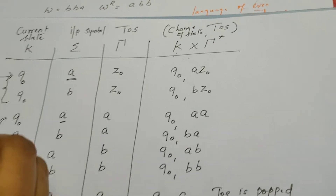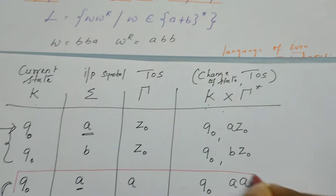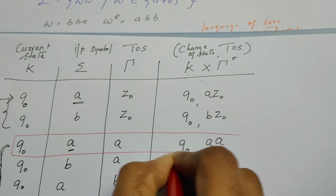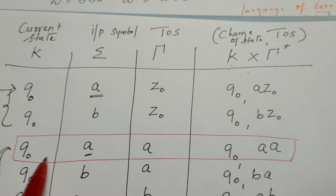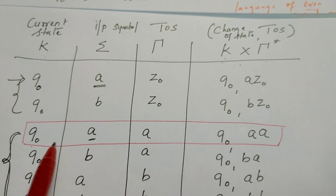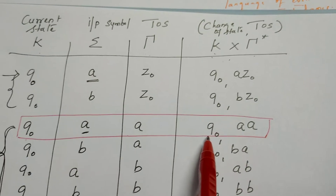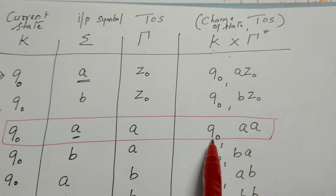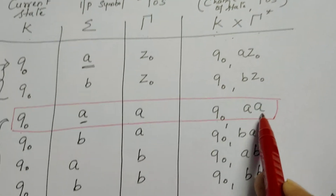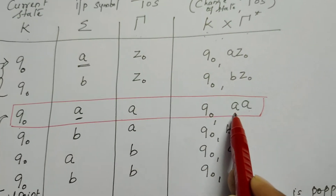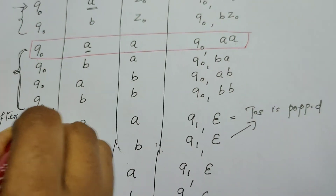Now let us look into a few rules. Look into this rule: Q0, a, a. In this situation the PDA reacts like this — it continues to stay in Q0, and since the top of the stack already contains 'a', another 'a' is also pushed. Now let us observe the next rule.